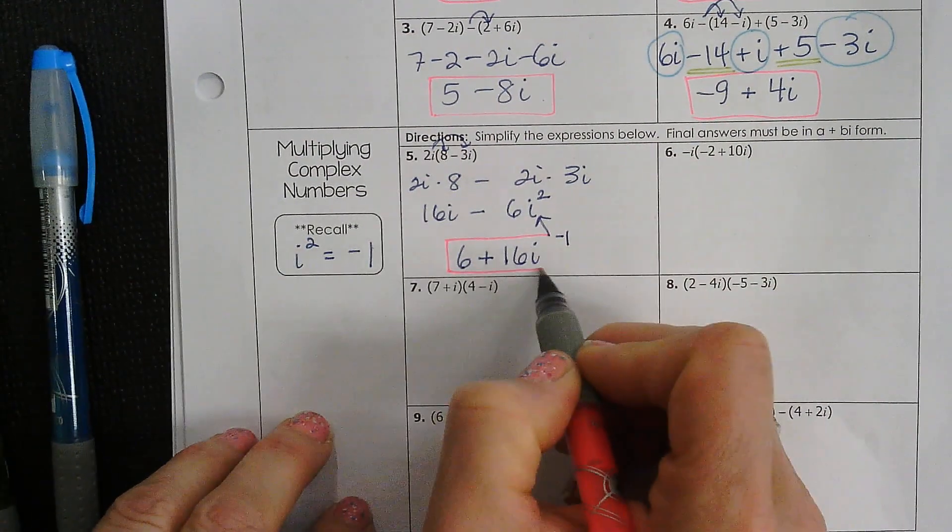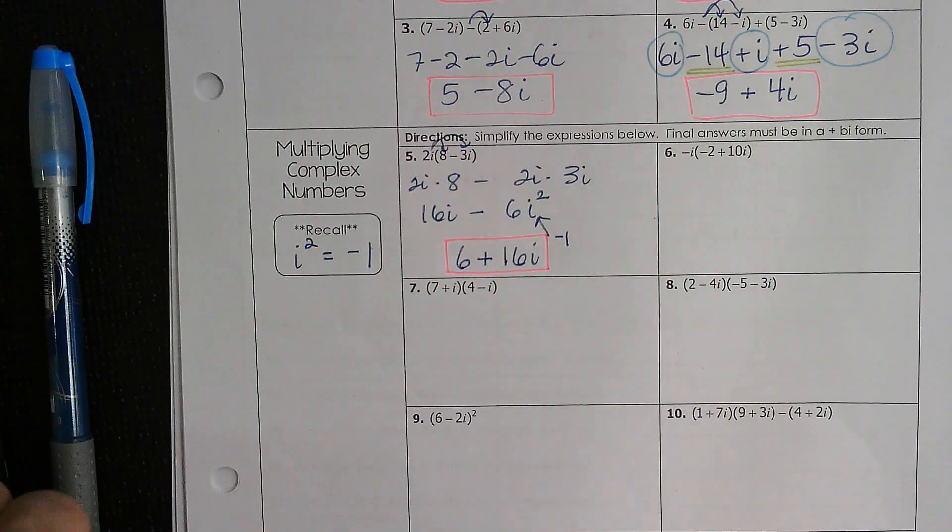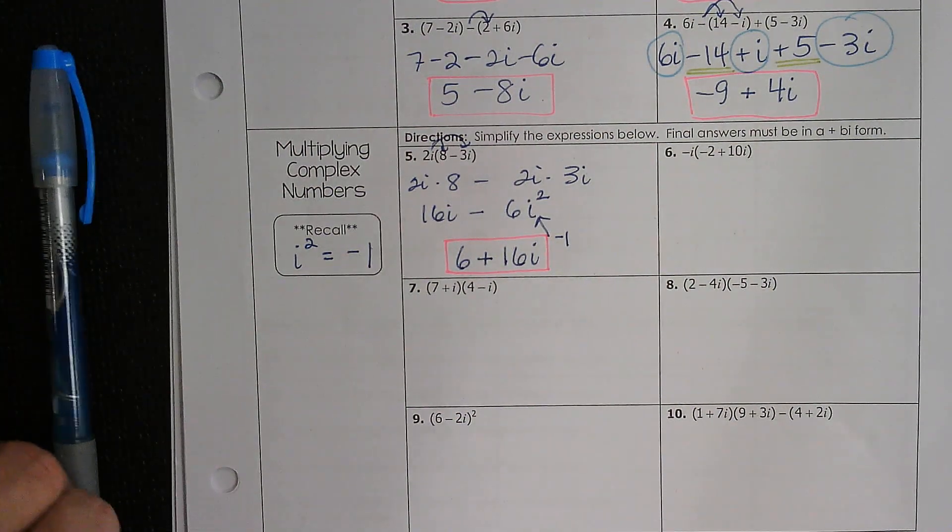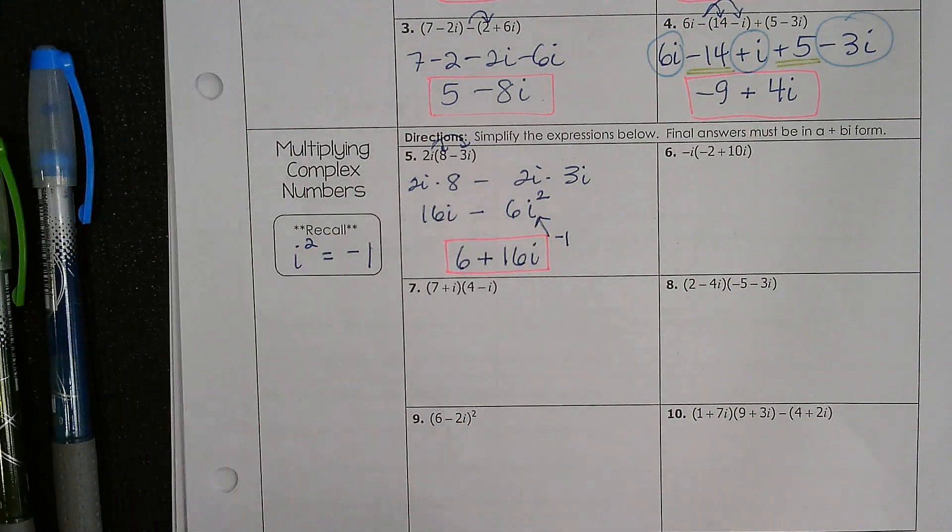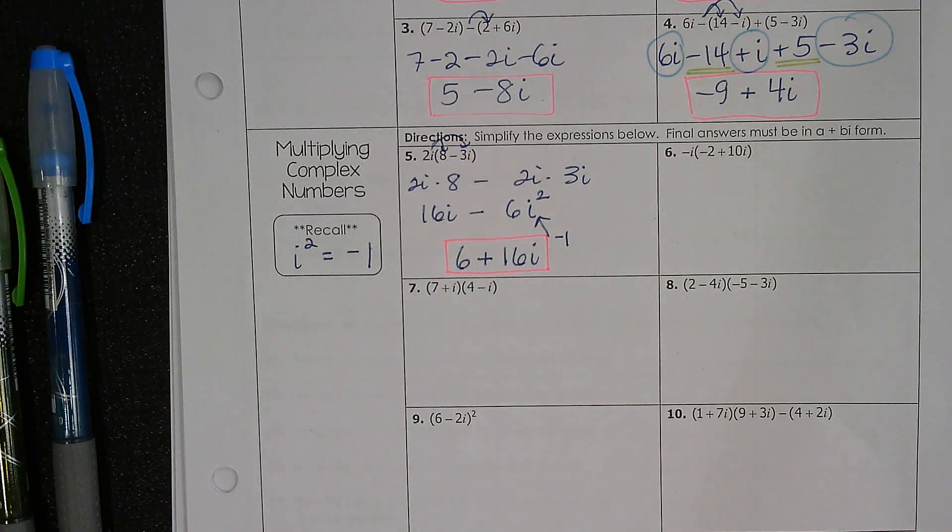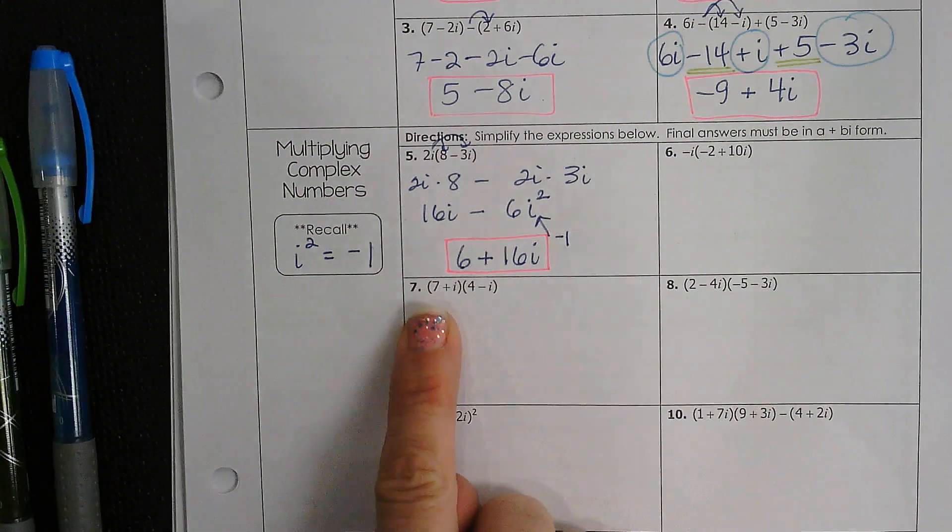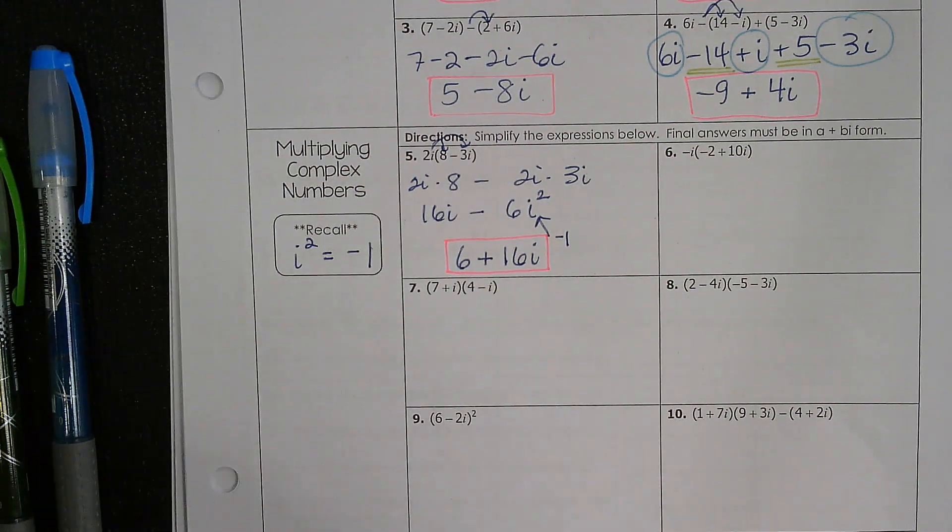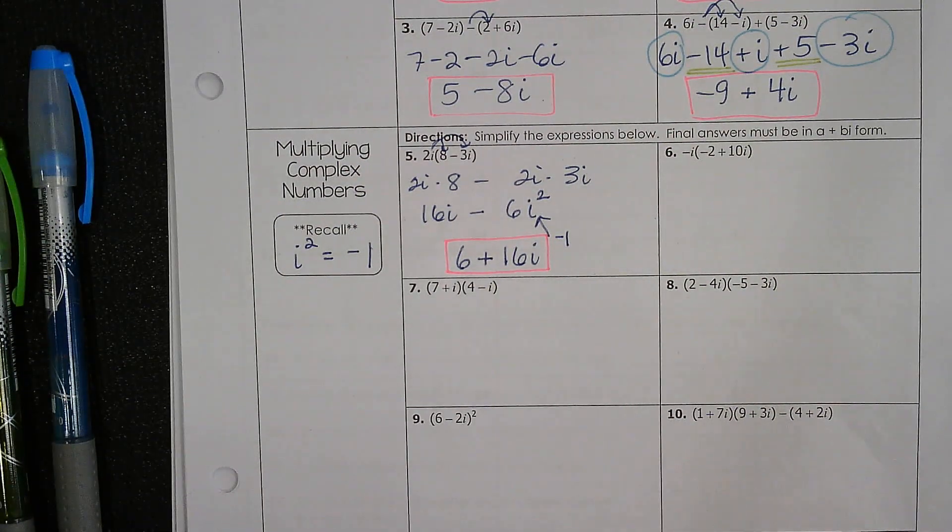Tricky, right? That's why we have to remember that. I'm going to go down the column instead of over. So let's try this one. These are both complex numbers, 7 plus i times 4 minus i.